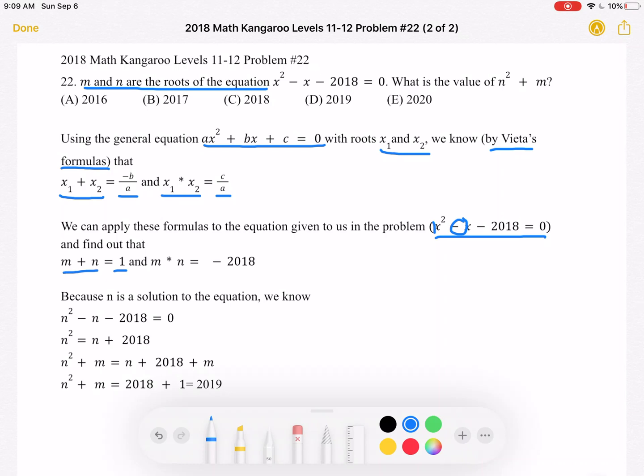And then we have the product of the roots, m times n, must be equal to c, which is negative 2018, over a, which again we know is 1. So the product of the roots must be negative 2018.